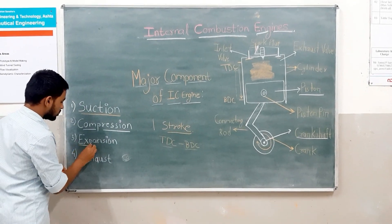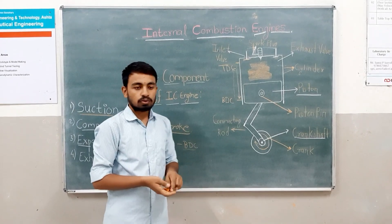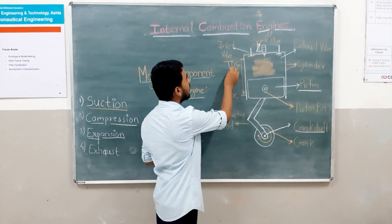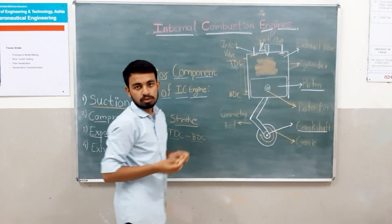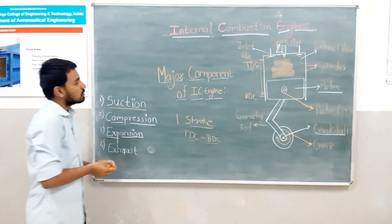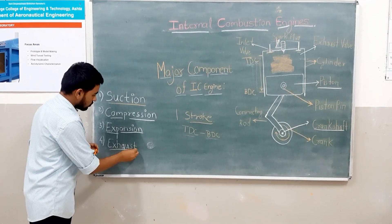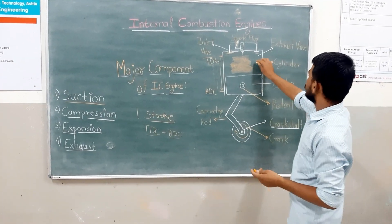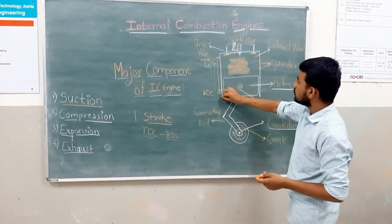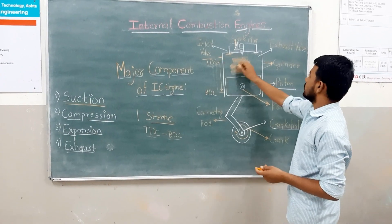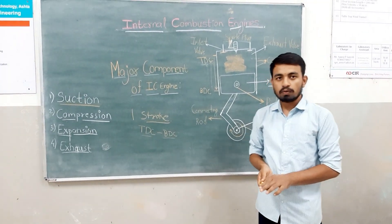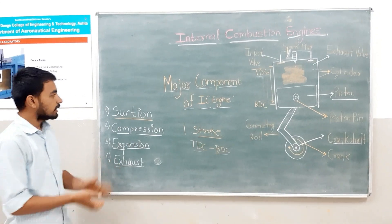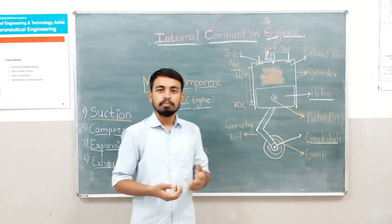The third stroke is the expansion stroke, also known as the power stroke. After compression, the spark plug ignites the mixture and expansion of burnt gases takes place, pushing the piston from TDC to BDC. This is the process when the engine generates power. The fourth and last stroke is the exhaust stroke, where the burnt gases are expelled as the exhaust valve opens and the piston moves from BDC to TDC. This completes the four-stroke cycle, and these four processes repeat thousands of times per minute.